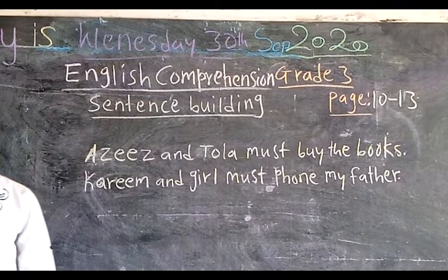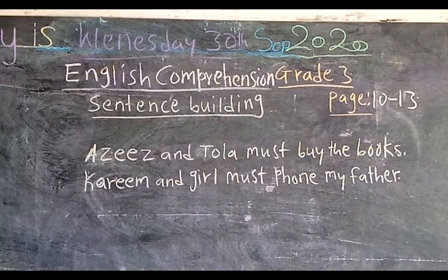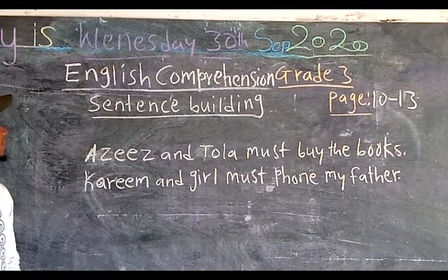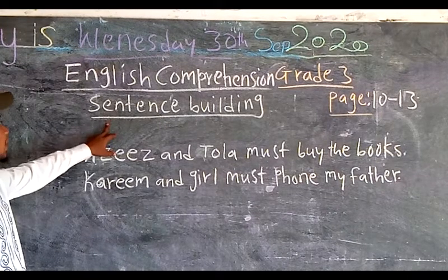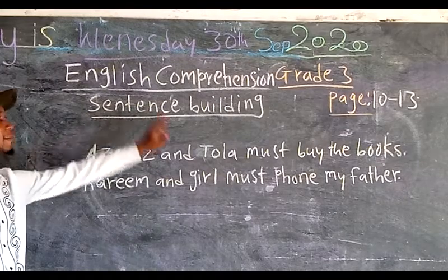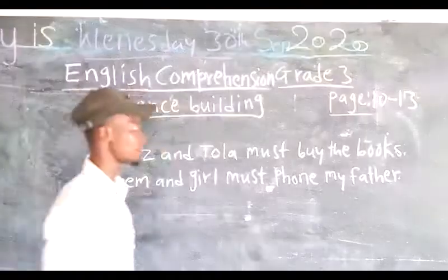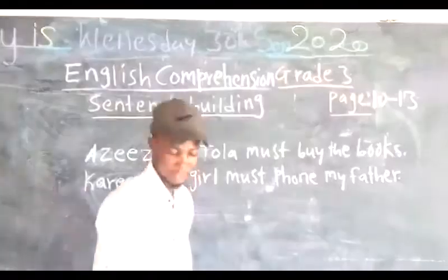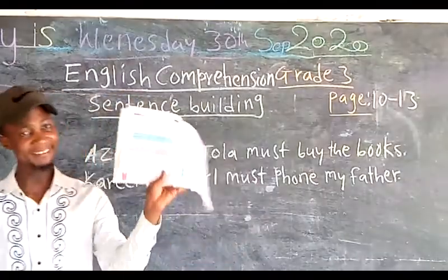English comprehension for grade 4. This is a continuation from our previous lesson. Today we are going to look at sentence building. Sentence building. You can turn to page 10.